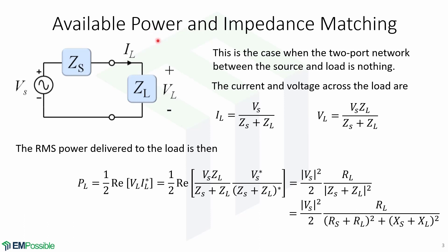Now we will look at the available power and impedance matching in order to calculate the available power. If nothing is connected, the current and voltage across the load are defined by this: Il equal to Vs over Zs plus Zl, and Vl. The RMS power delivered to the load is then given by this expression.